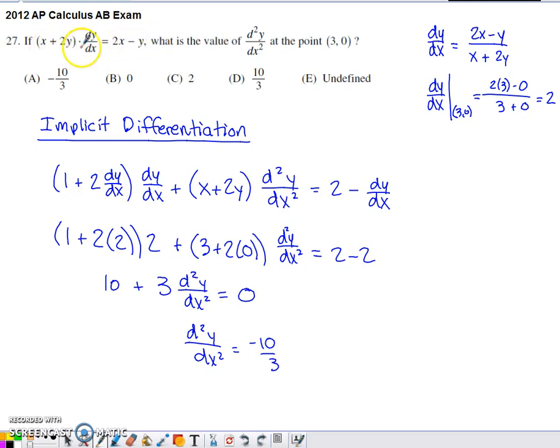So I realized if I just take the derivative of both sides of this equation, I'm going to end up with a second derivative appearing. Now the thing I have to be careful of is x plus 2y is going to be a function of x. I'm also going to need to assume that dy dx is a function of x. So when I do my derivative on the left-hand side, I'm going to have to be careful and use a product rule as I do that derivative.